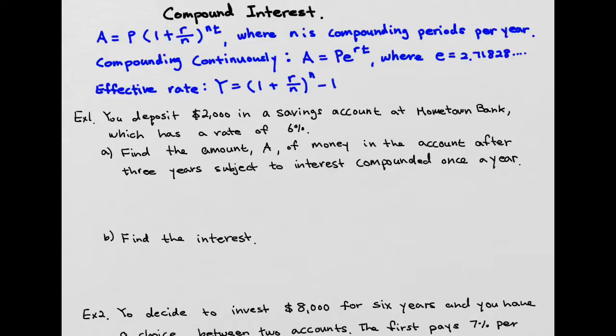Looking at example one, we're trying to deposit $2,000 in a savings account at a 6% rate. Find the amount of the interest that's compounded once a year. We're looking for amount, the total amount. You have compound once a year, so if you have compound once a year, your N, because N is going to be the compounding period, compound once a year is going to be 1.